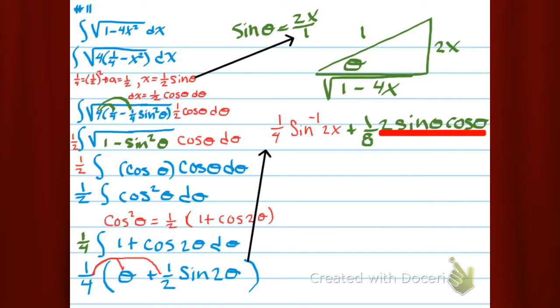The 2 sine theta cos theta, that's the sine 2 theta. Now what? I'm going to read off of my triangle. What's the sine? It's the opposite over the hypotenuse. And what's the cosine? It's the adjacent over the hypotenuse. And then I reduce.